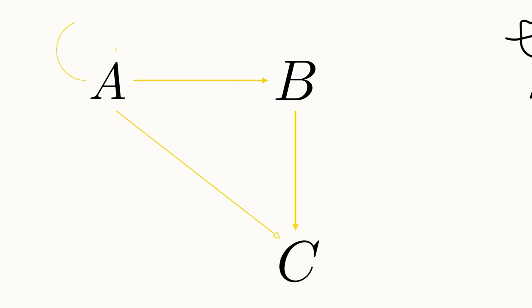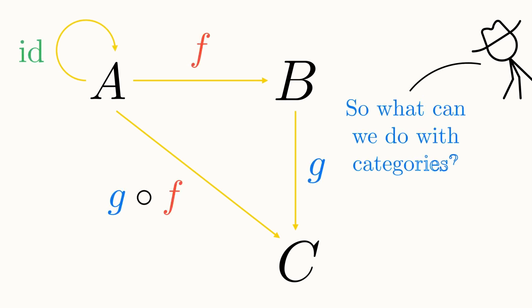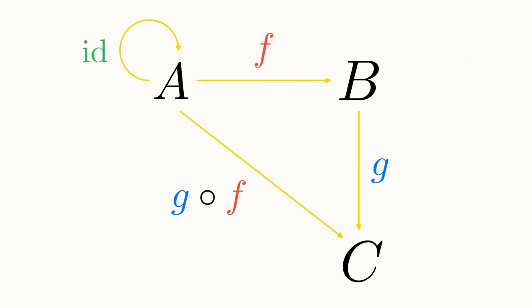The reason that category theory is so useful is for the same reason that abstracting our rational numbers was useful. We can construct proofs that directly apply to all these different areas of maths at once. Consider, for example, the rather simple proof that each object in a category can only have one unique identity arrow.